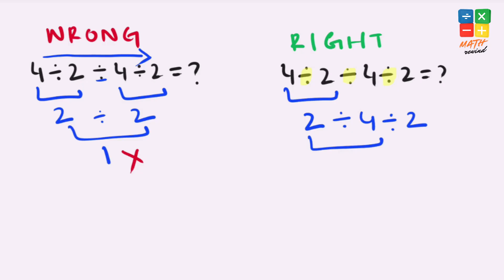To make our lives easier, we can write this 2 divided by 4 as 2 over 4, and we have divided by 2 from the original expression. Now what we can do is we can use the KCF rule here: keep, change, and flip.